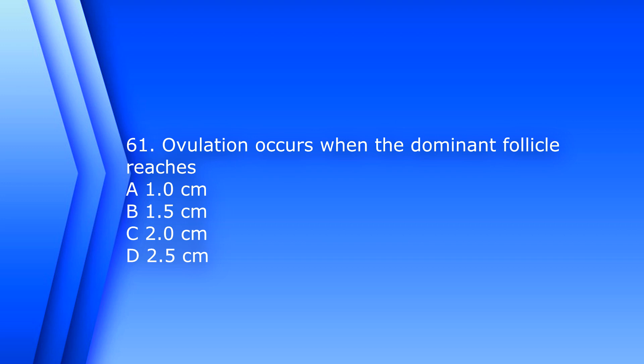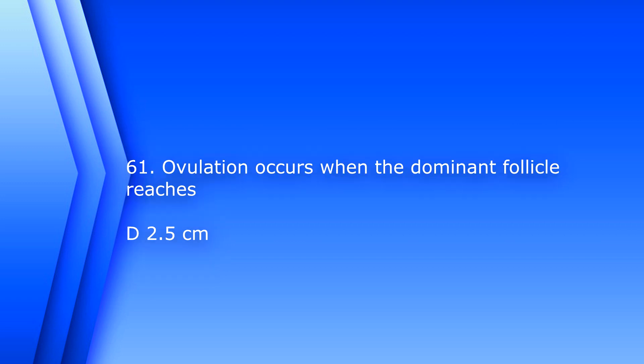Question 61. Ovulation occurs when the dominant follicle reaches: A. 1 cm, B. 1.5 cm, C. 2 cm, D. 2.5 cm. The answer is D, 2.5 cm.